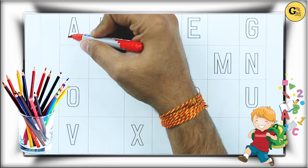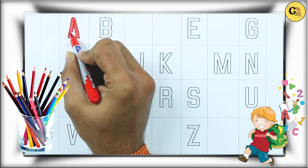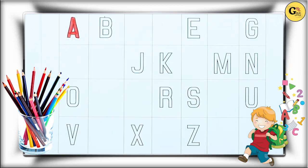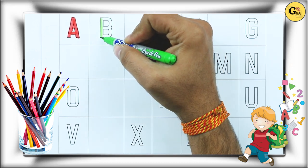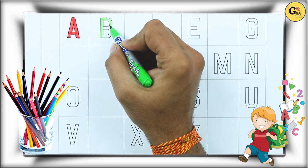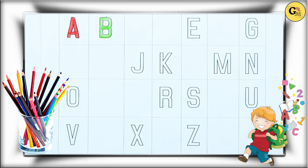A. A for apple with red color. A for apple. B. B for ball with green color.